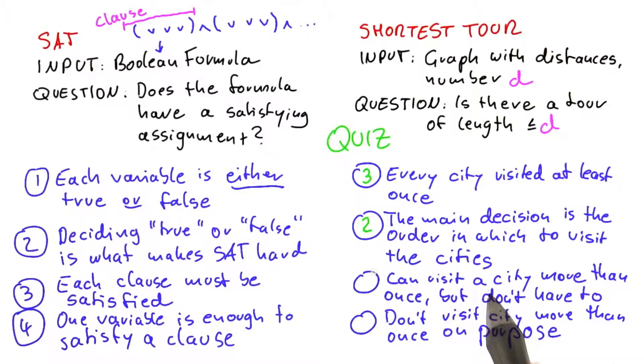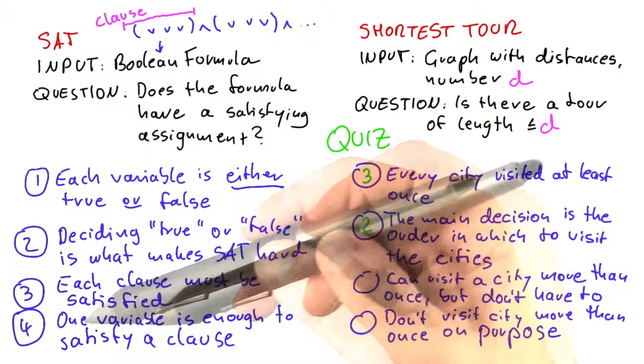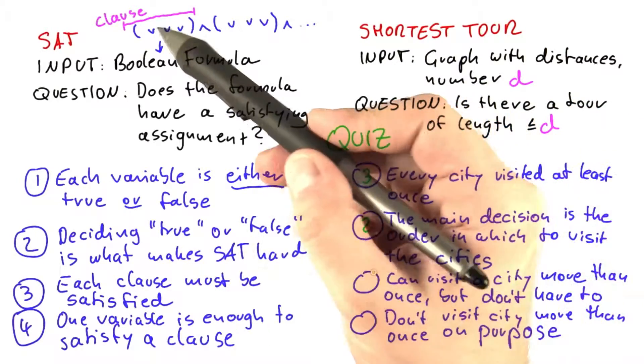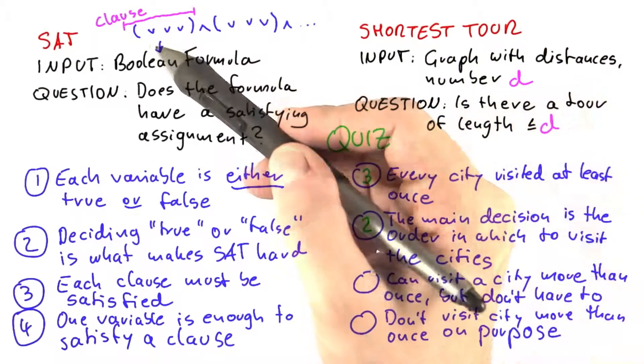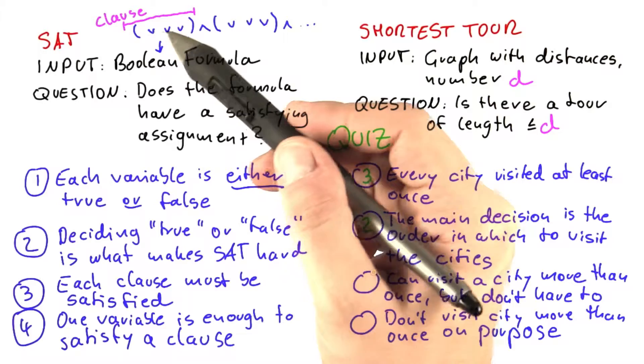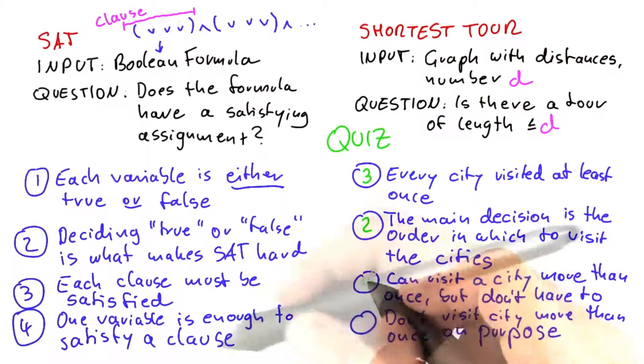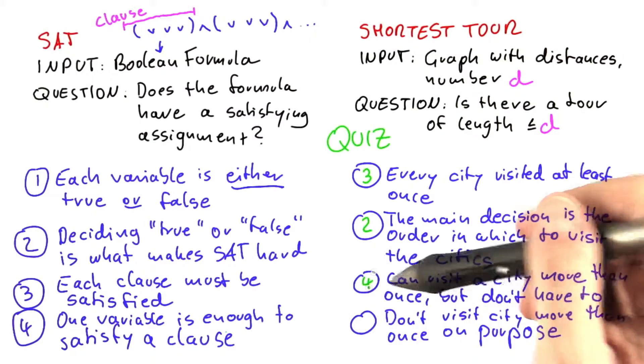Then being able to visit a city more than once but not having to do so, I think that is closely related to number four because what we have here is one variable is enough to satisfy a clause, but of course we can use more than one variable to satisfy the clause. It doesn't hurt if there's more variables here that will evaluate to true. So we can satisfy a clause in multiple ways, but we don't have to.